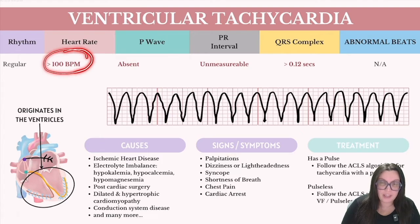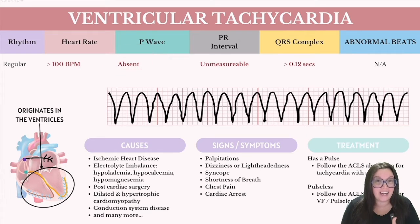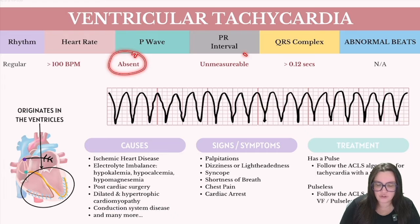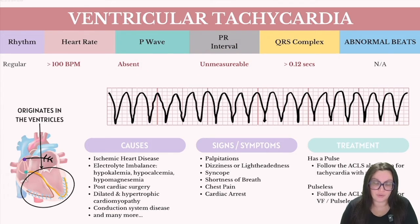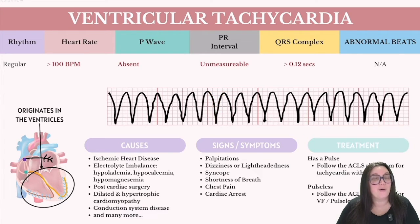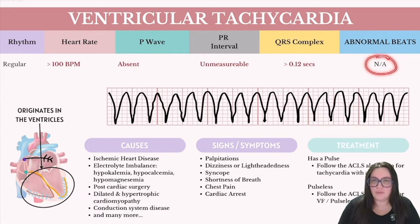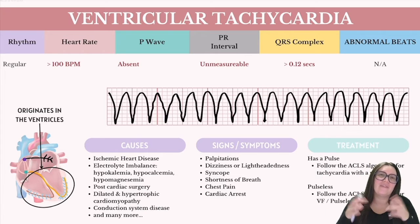Your heart rate is usually going to be greater than 100 beats per minute. There are going to be no P waves, because this is all happening within the ventricles — the atria are no longer working. So no P wave means no PR interval. Your QRS complex, remember: anytime we have ventricular or bundle branch in the name, the QRS is going to be big, wide, and ugly — greater than 0.12 seconds. There are also no extra ectopic beats in this rhythm.